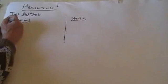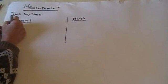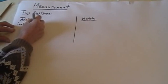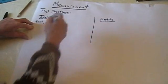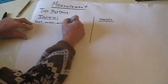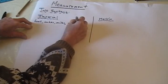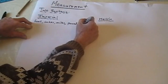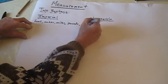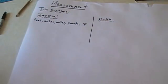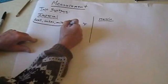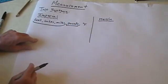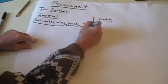In the imperial system, you use units such as feet, inches, and miles — those are measures of length. You'll also use units such as pounds, which is a measure of weight. And you'll also use units such as degrees Fahrenheit, which is a measure of temperature.